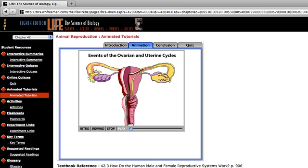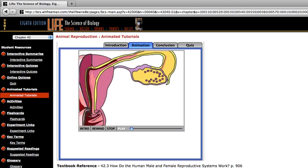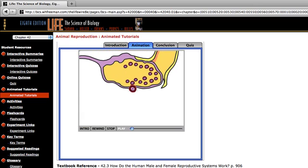At sexual maturity, each of a woman's ovaries contains about 200,000 immature eggs called primary oocytes. A primary oocyte is diploid and is arrested in prophase one of meiosis. A layer of follicle cells surrounds each primary oocyte. Together an oocyte and its follicle cells make up a follicle.